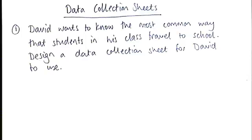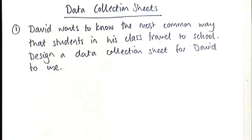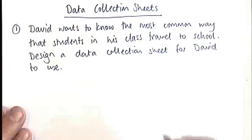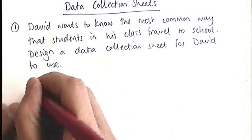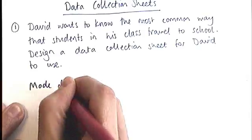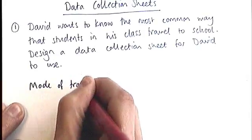This is the ideal situation to use a tally chart. He can stand there with bus, car, bike, walk, and other on his tally chart, and literally just tally off people really quickly. When you've got just one piece of data to collect from each person — in this case the mode of transport — you're going to use a tally chart.